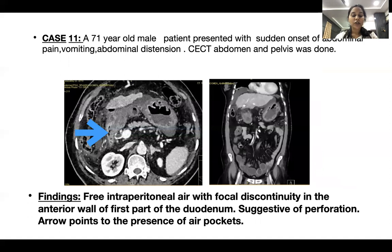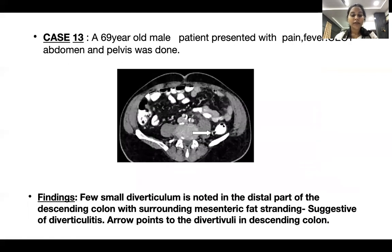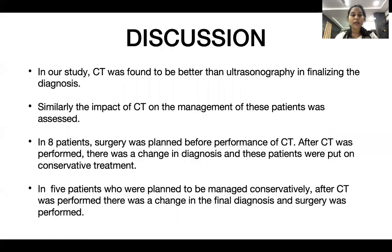Case 11: free intraperitoneal air with focal discontinuity in the anterior wall of the first part of the duodenum, suggestive of perforation. Case 12: axial image A shows dilatation of distal jejunal and proximal ileal loops; image B shows a large obstructed right inguinal hernia with bowel loops as its content and minimal free peritoneal fluid. Case 13: a few small diverticula noted in the distal descending colon with surrounding mesenteric fat stranding, suggestive of diverticulitis.